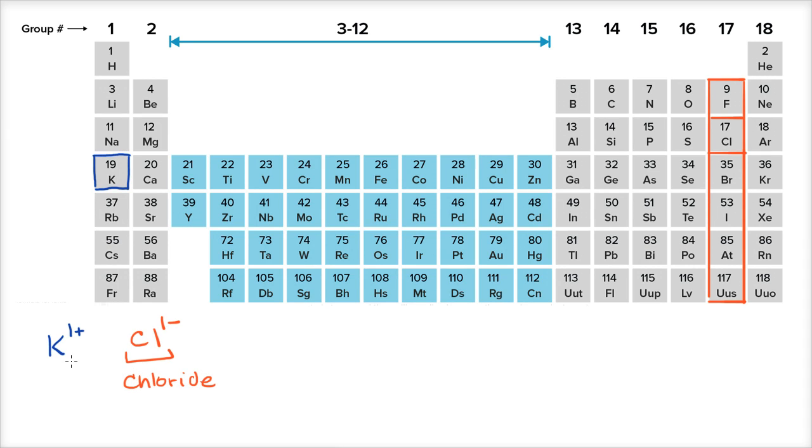Now as you can imagine, with potassium having a positive one charge, or one plus charge, and this having a negative charge, they're going to be attracted to each other. And they can actually form an ionic compound. And the ionic compound they would form, we would write as, you'd write your positive ion first, and then you would write your negative ion.